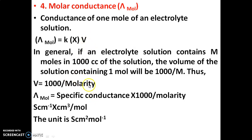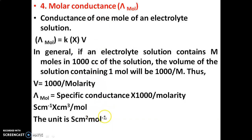Substituting: molar conductance = κ × 1000 / molarity. The unit of specific conductance is Siemens per centimeter, multiplied by 1000 cm³, divided by molarity in moles. After simplification, the unit of molar conductance is Siemens·centimeter² per mole — S·cm²/mol.